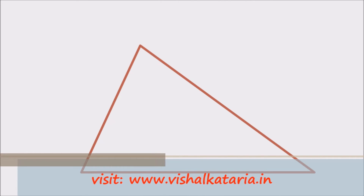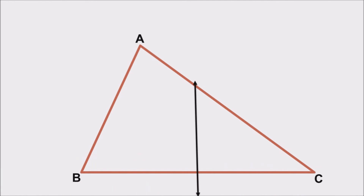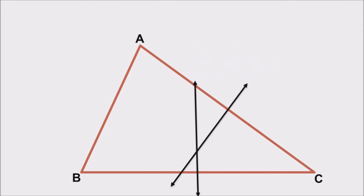Again draw a triangle and label it as ABC. This time let's plot the perpendicular bisector to side BC. Perpendicular bisector means it will bisect side BC — passing through its midpoint — and is perpendicular to it. A perpendicular bisector is a line which bisects a given side and is perpendicular to it. Let's plot another perpendicular bisector.